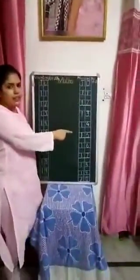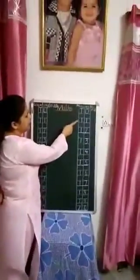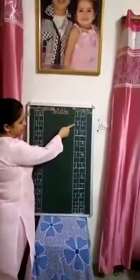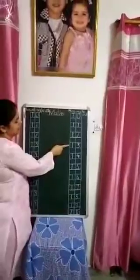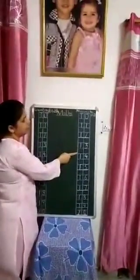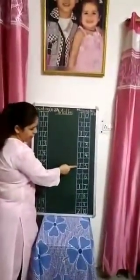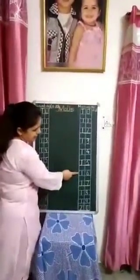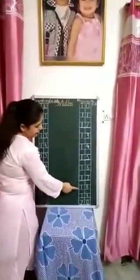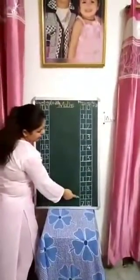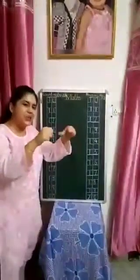Let's read it one more time to check if we have made any mistakes. Start again: eleven, twelve, thirteen, fourteen, fifteen, sixteen, seventeen, eighteen, nineteen, and twenty.